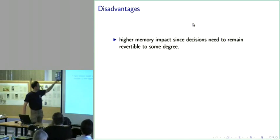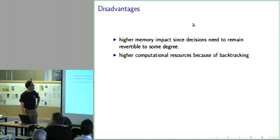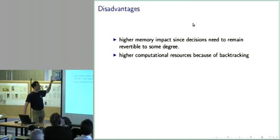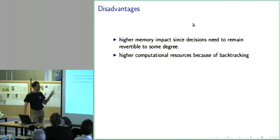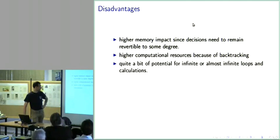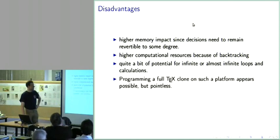Disadvantages of TeX — well, I talked about it being disadvantaged in the beginning. Disadvantages of the model I presented: one needs more memory, which is actually a no-brainer given the memory uses of ConTeXt since we already waste lots of memory implementing algorithms in TeX. Backtracking causes higher computational resource use, and you get more potential for things that run on virtually eternally.